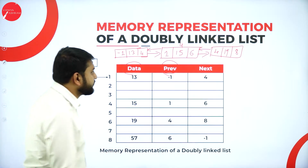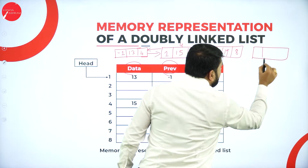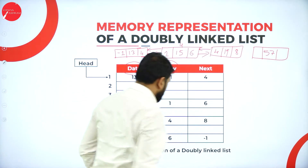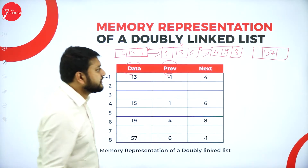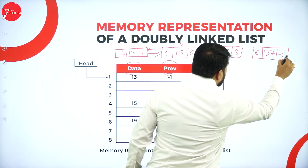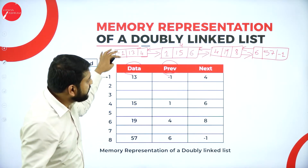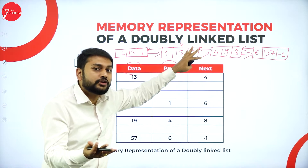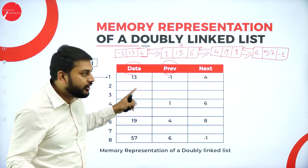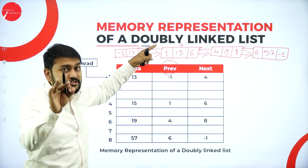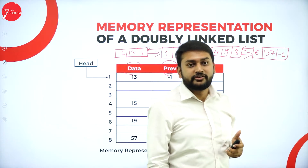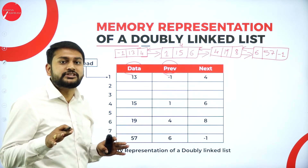Node number 8 has data 57, previous address 6, and next address minus one — indicating it is the last node. This is the doubly linked list stored in memory. This is the memory representation of a doubly linked list.